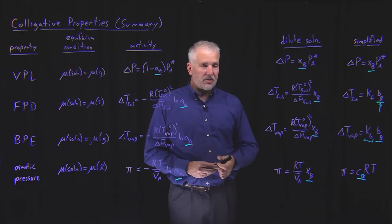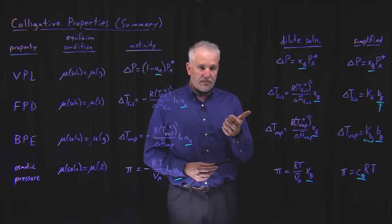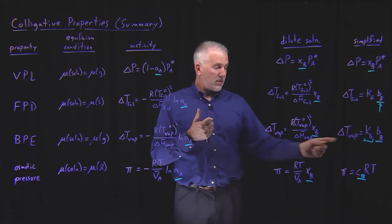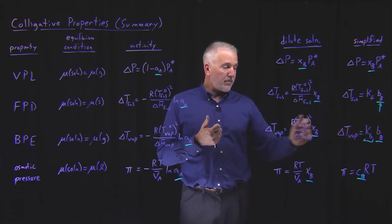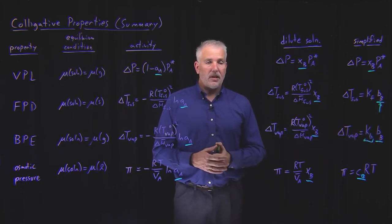So those features, proportional to the amount of solute but not the identity, proportional depends on the type of solvent, that's what makes something a colligative property.